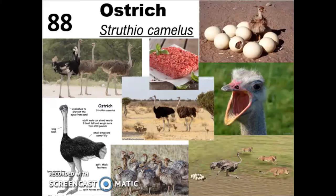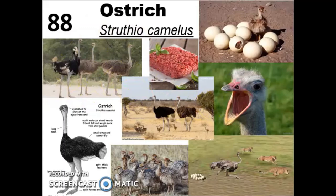The first ratite we're going to talk about is the ostrich — notice that all of these ratites have different scientific names because they are all separate species that evolved at separate times. The ostrich is native to Africa and can reach over 400 pounds and over nine feet high. They can live anywhere from 50 to 70 years. A key feature to recognize them from other large ratites is that they only have two toes. They can't fly, and instead use their wings primarily for communication and balance when running, reaching top speeds of up to 40 miles per hour.